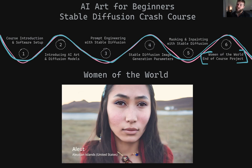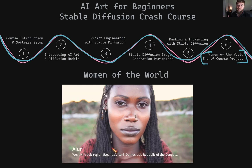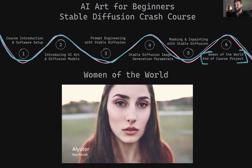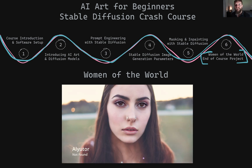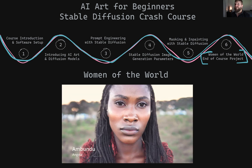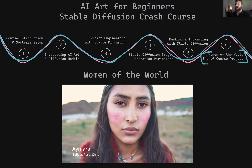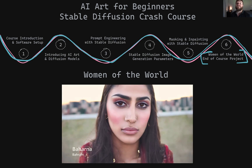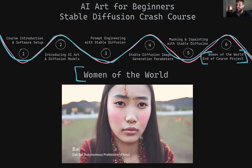Throughout this course, we will be learning all about Stable Diffusion, an open source and freely available artificial intelligence that we can download on our computer today and use to generate images for free. As we journey through the ins and outs of Stable Diffusion, we'll be working towards and aiming at building enough skill and expertise to be able to recreate the end-of-course project, the Women of the World AI art project.